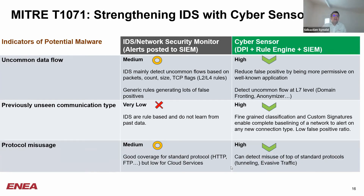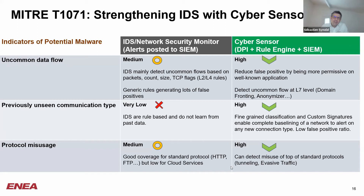The last technique is about protocol misuse. IDS are efficient for standard protocols like HTTP, FTP, or email protocols like POP3, SMTP, or IMAP. But a cyber sensor can go further and detect evasion methods such as tunneling on top of standard protocols like ICMP or DNS. It can also detect evasive traffic like anonymizers or non-corporate VPNs, which can be natively detected by a cyber sensor, expanding the coverage beyond what is provided by a traditional IDS.